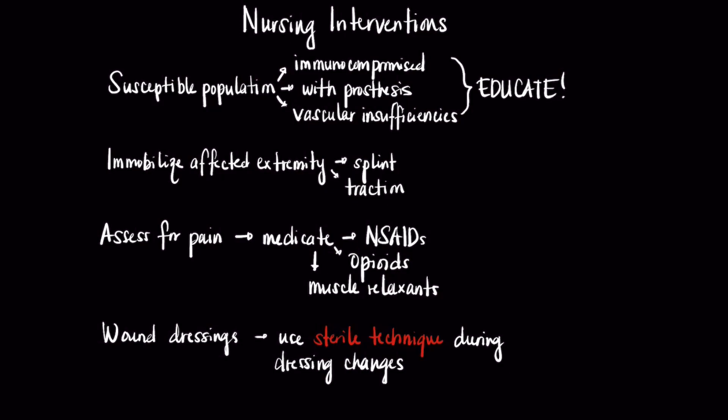With acute interventions, it's important to immobilize the affected extremity using either a splint or traction to decrease pain and risk of fractures. Assess the patient's pain level, medicate them as needed, and assess the effectiveness of pain medication. With regard to any open wounds, always use sterile technique during dressing changes to prevent the spread of infection.